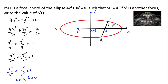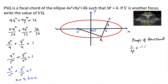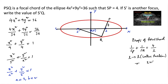Such that SP = 4 units and S' is another focus — then what is the value of S'Q? From the properties of a focal chord, we have: 1/SP + 1/SQ = 4/L, where L is the length of the latus rectum, given for standard form as 2b²/a.